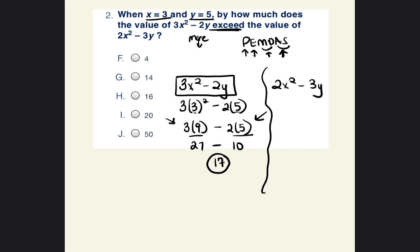Now let's do the same thing with the second equation. Again, we put 3 for x and 5 for y. So we have 2 times 3 squared minus 3 times 5. Order of operations: parentheses — nothing inside. Next is exponent: 3 times 3 is 9. So it'll be 2 times 9 minus 3 times 5.